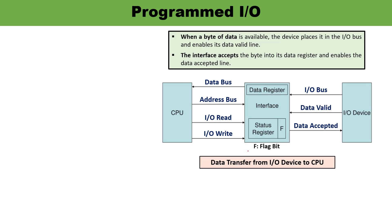Let us see with the help of this diagram how data transfer from IO devices to the CPU actually occurs. On the right hand side you can see the IO devices — input/output devices. When the device is ready for data transfer, it means data is available. When a data byte is available, the device places the data on the IO buses. When the device places data on the IO buses, the data valid line will be enabled. When the data valid line is enabled and data is available on the IO buses, the interface accepts the data and stores it into the data register.